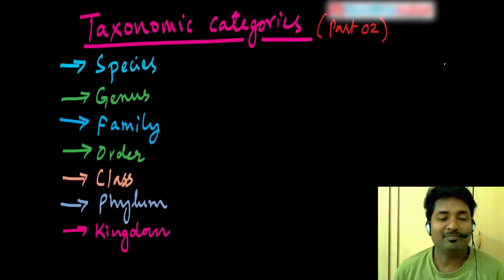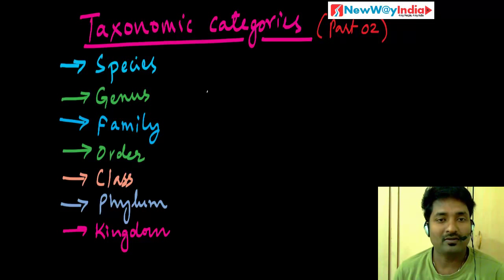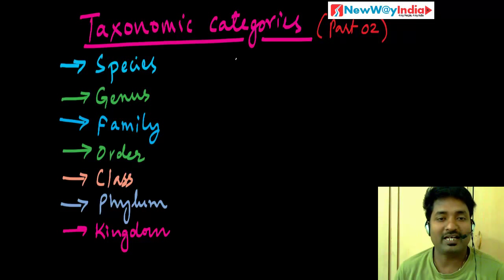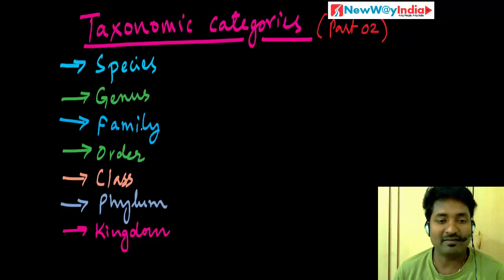Hi! In the previous video we learned about taxonomic categories with simple examples of man and mango. In this video we go into detail about taxonomic categories — what is the species, what are the different species examples, genus, family, order, and all those things.